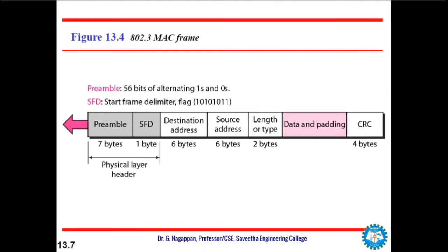The field contains 7 bytes of data, and those 0s and 1s alert the receiving system to the coming frame and enable it to synchronize its clock if it is out of synchronization. The pattern provides only an alert and timing pulse. This 56-bit pattern allows the station to miss some bits at the beginning of the frame. The preamble is actually added at the physical layer and is not formally part of the frame.